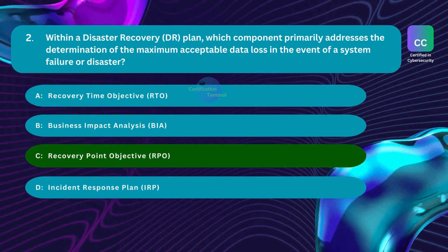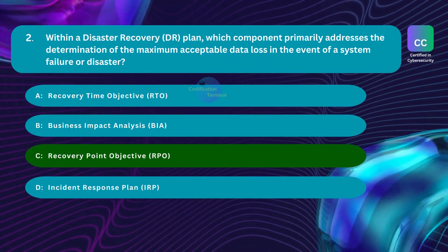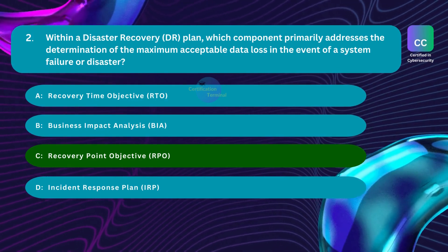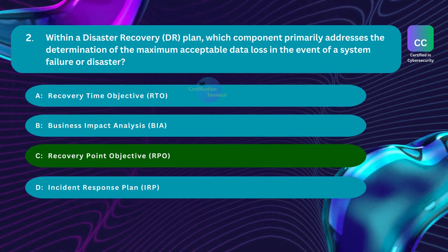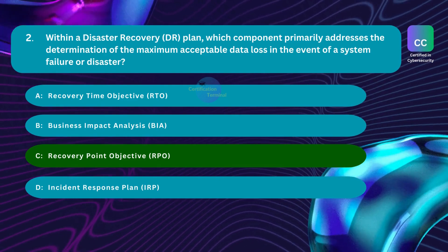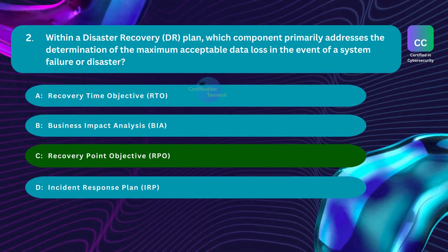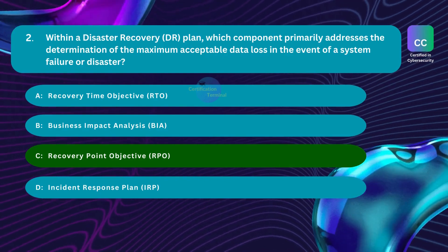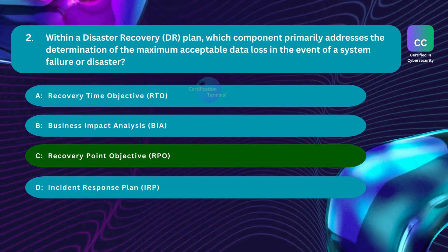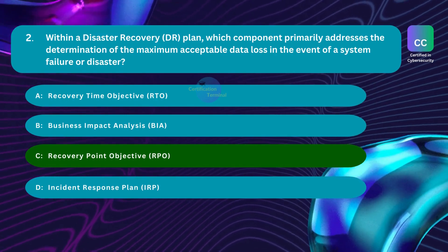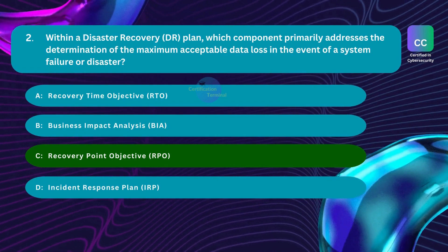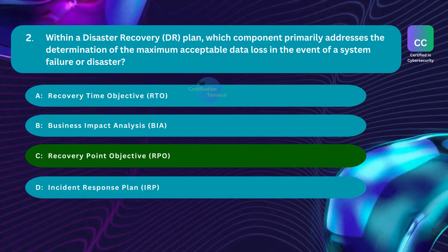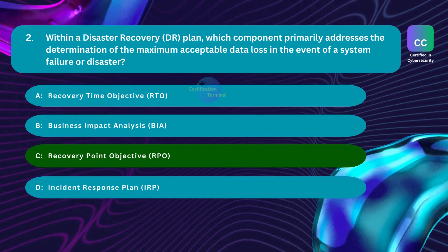Option A, recovery time objective, is incorrect. Recovery time objective defines the targeted time frame within which systems and services must be restored after a disruption — it focuses on recovery time rather than maximum tolerable data loss. Option B, business impact analysis, is incorrect — it assesses potential impacts of disruptions and prioritizes recovery efforts, but does not specifically address maximum tolerable data loss. Option D, incident response plan, is incorrect — it outlines procedures for responding to a security incident, not for defining maximum tolerable data loss.